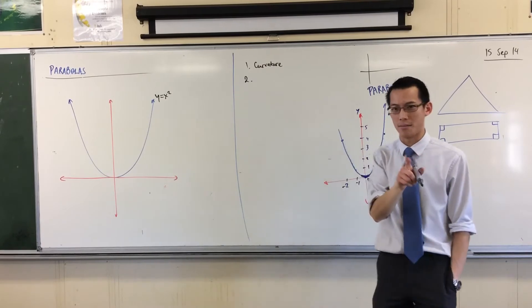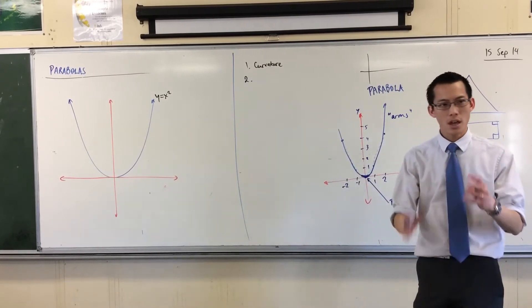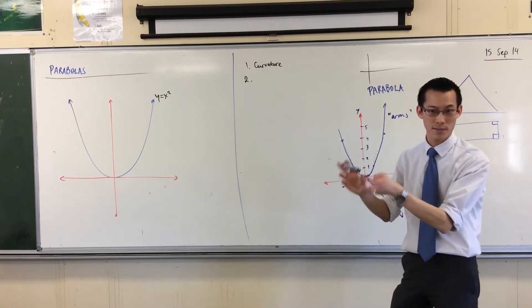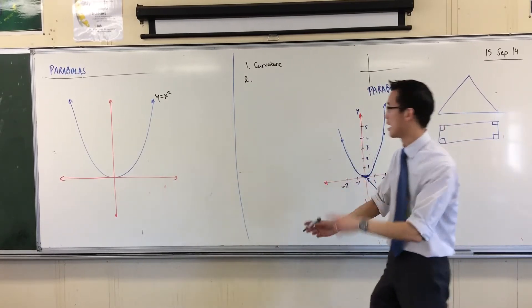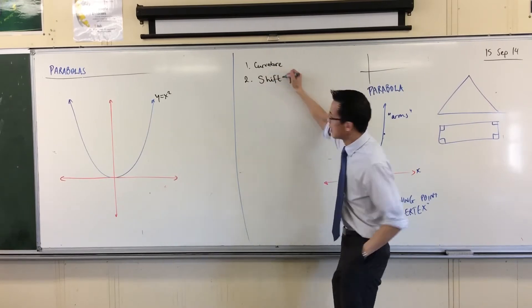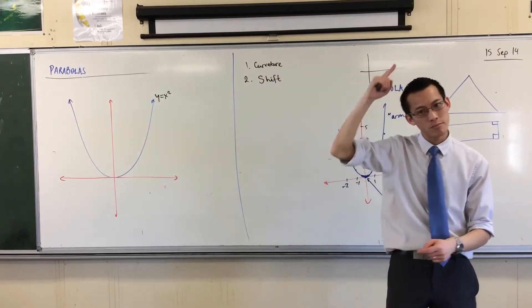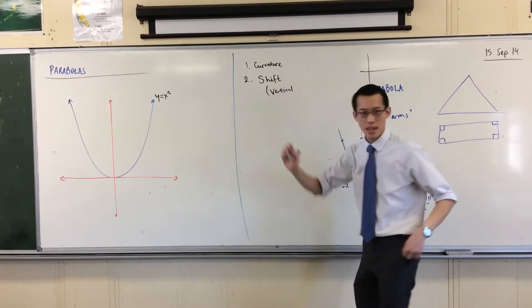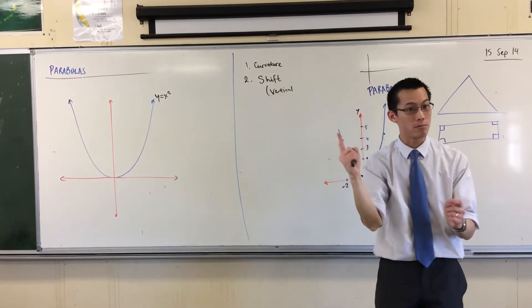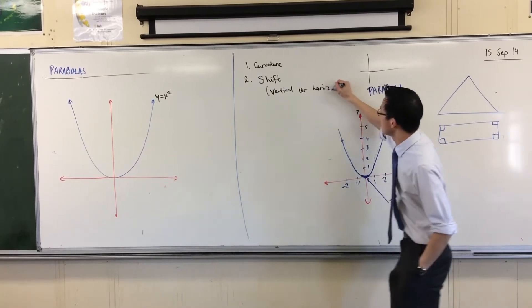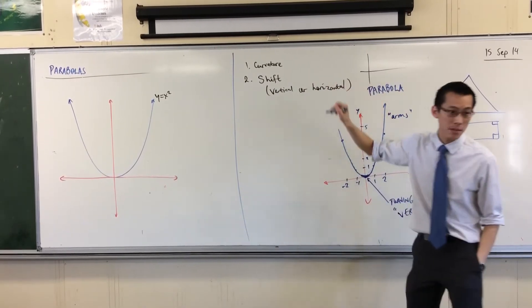Secondly, and this is actually quite hard, so pay attention. You need to be able to understand that from this graph I can make a whole bunch of different ones that are very similar. It's like a family, if you like. And they come by two ways. There's a shift up and down, so we call that vertical. And then you can shift it left and right, which is horizontal. And in fact, you can do both at the same time. I'll show you how.